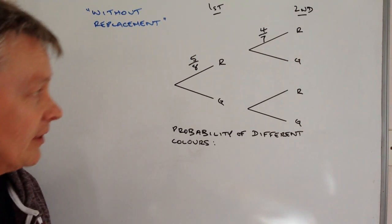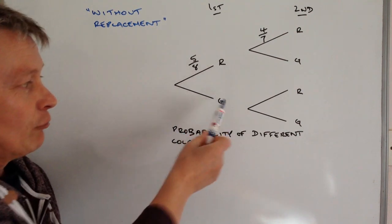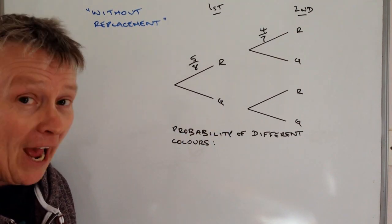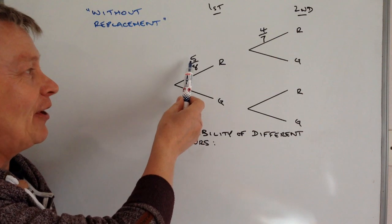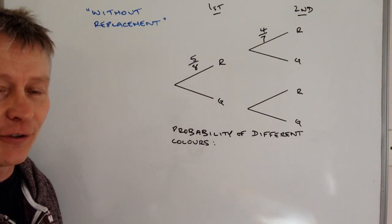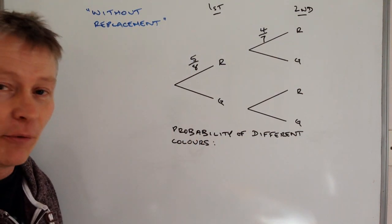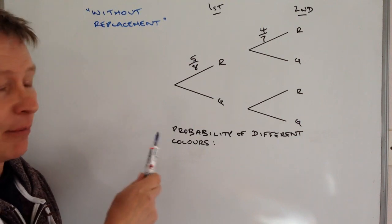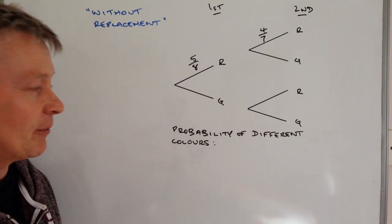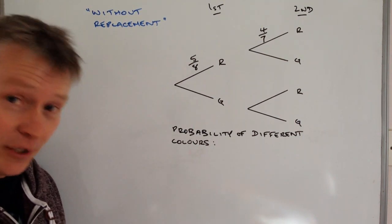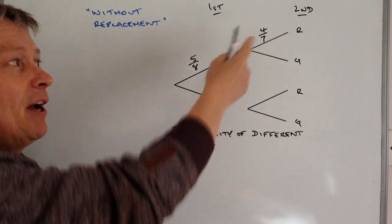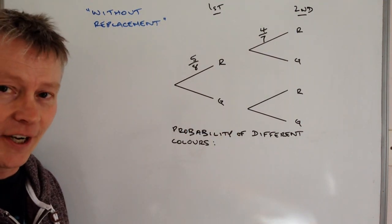In this particular case we've got a guy who's got some red and green marbles in a bag and he's got five red marbles and three green marbles and we're being asked to complete the probability tree but also work out the probability of him picking two different colours if he picks the first time and then again the second time.